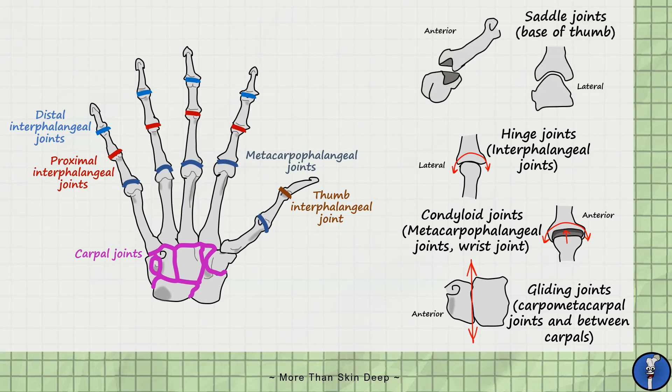Lastly we have the single saddle joint. This is shaped like a saddle and allows flexion and extension as well as a substantial amount of abduction and adduction. The base of thumb joint between the first metacarpal and the trapezium bone is a saddle joint.